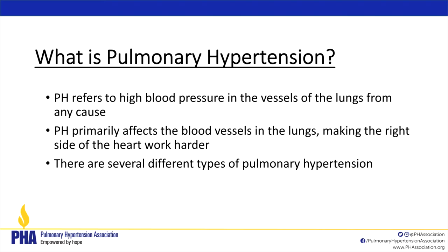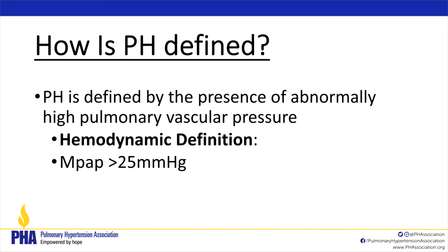What is pulmonary hypertension? PH refers to high blood pressure in the vessels of the lungs from any cause. We wish we knew more about it — we've come a long way but still don't know enough. It primarily affects blood vessels in the lungs, making the right side of the heart work a little bit harder, and there are several different types of pulmonary hypertension.